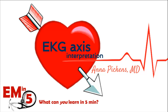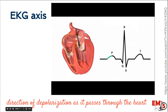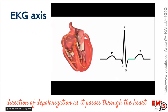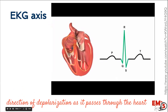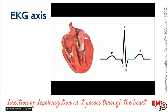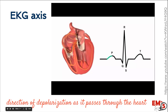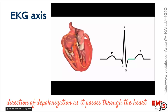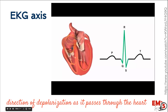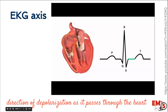Welcome to today's EM in 5. We're going to be talking about EKG interpretation, specifically determining the axis on an EKG. The axis of an EKG is the direction of electrical activity, or depolarization, as it passes through the heart — and specifically it's the average.